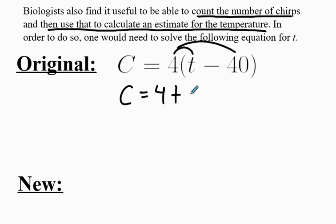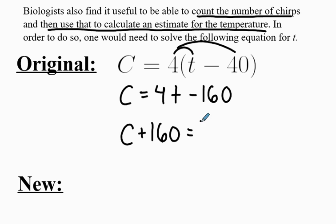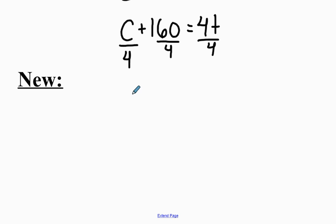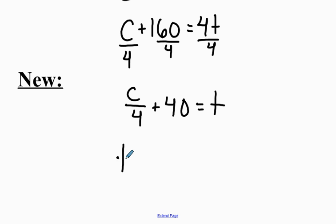In order to do this, I'll solve for T. I can distribute to get 4T minus 160. I then add 160 to the other side, and the last step is to divide everything by 4. My new equation is then C divided by 4 plus 40 equals T. Rewriting with T on the left: T is equal to C divided by 4 plus 40. Now I can give it a chirp rate and it will return a temperature.